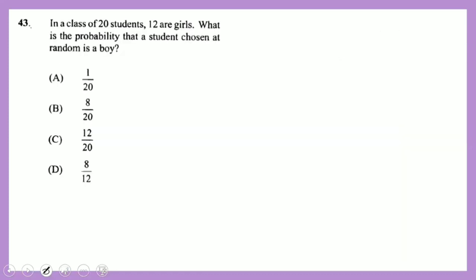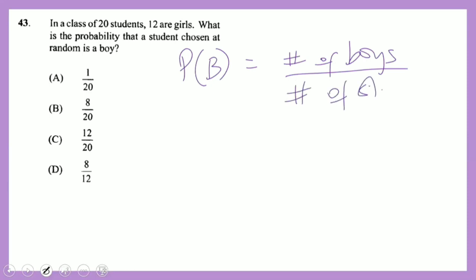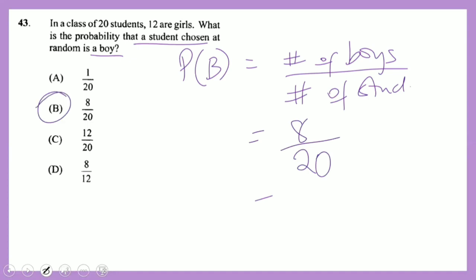Question 43: in a class of 20 students, 12 are girls. What is the probability that a student chosen at random is a boy? There are 8 boys out of 20 students. Probability = 8/20.